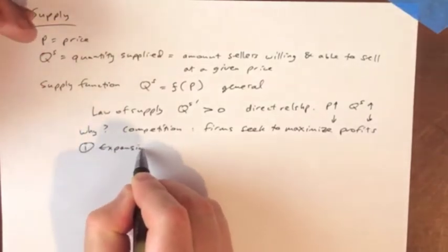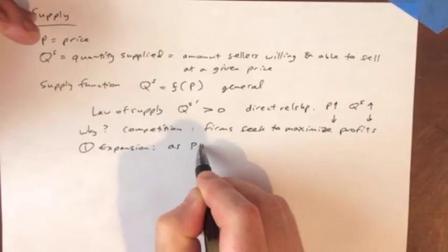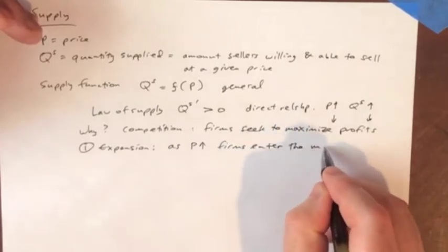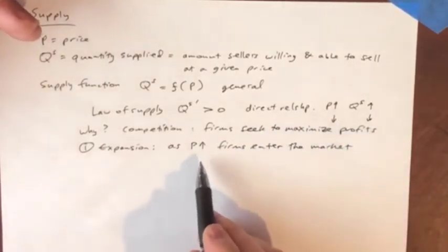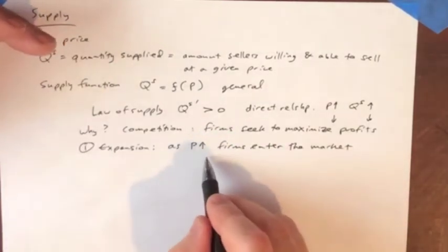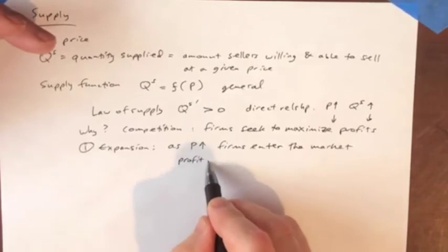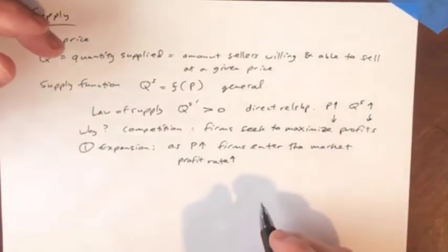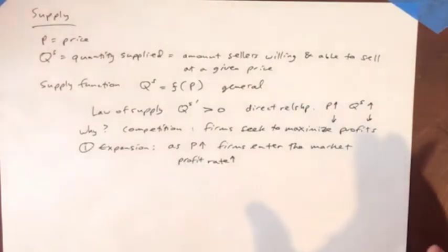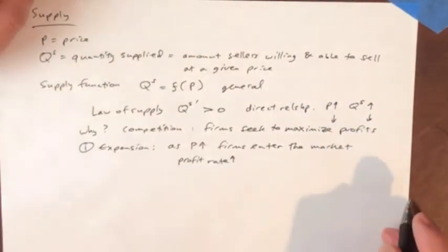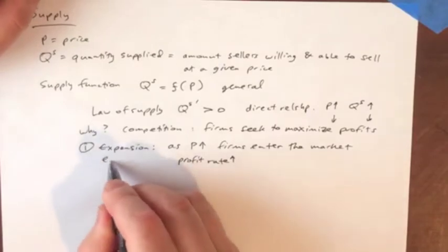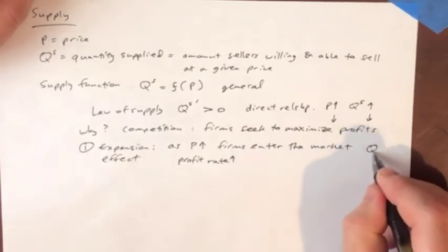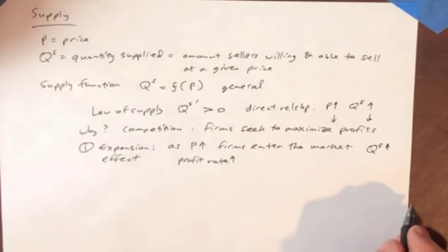Marshall argued, number one, we have an expansion effect that occurs. As the price increases, firms are going to enter that market. They are drawn by this, and the reason is because as the price goes up, we assume that the profit rate also goes up. Very important assumption goes back to Ricardo. It has a long history in terms of the history of economic thought. Expansion effect. Prices increase, new firms enter the market, and that is the reason why the quantity supplied increases as the price increases.